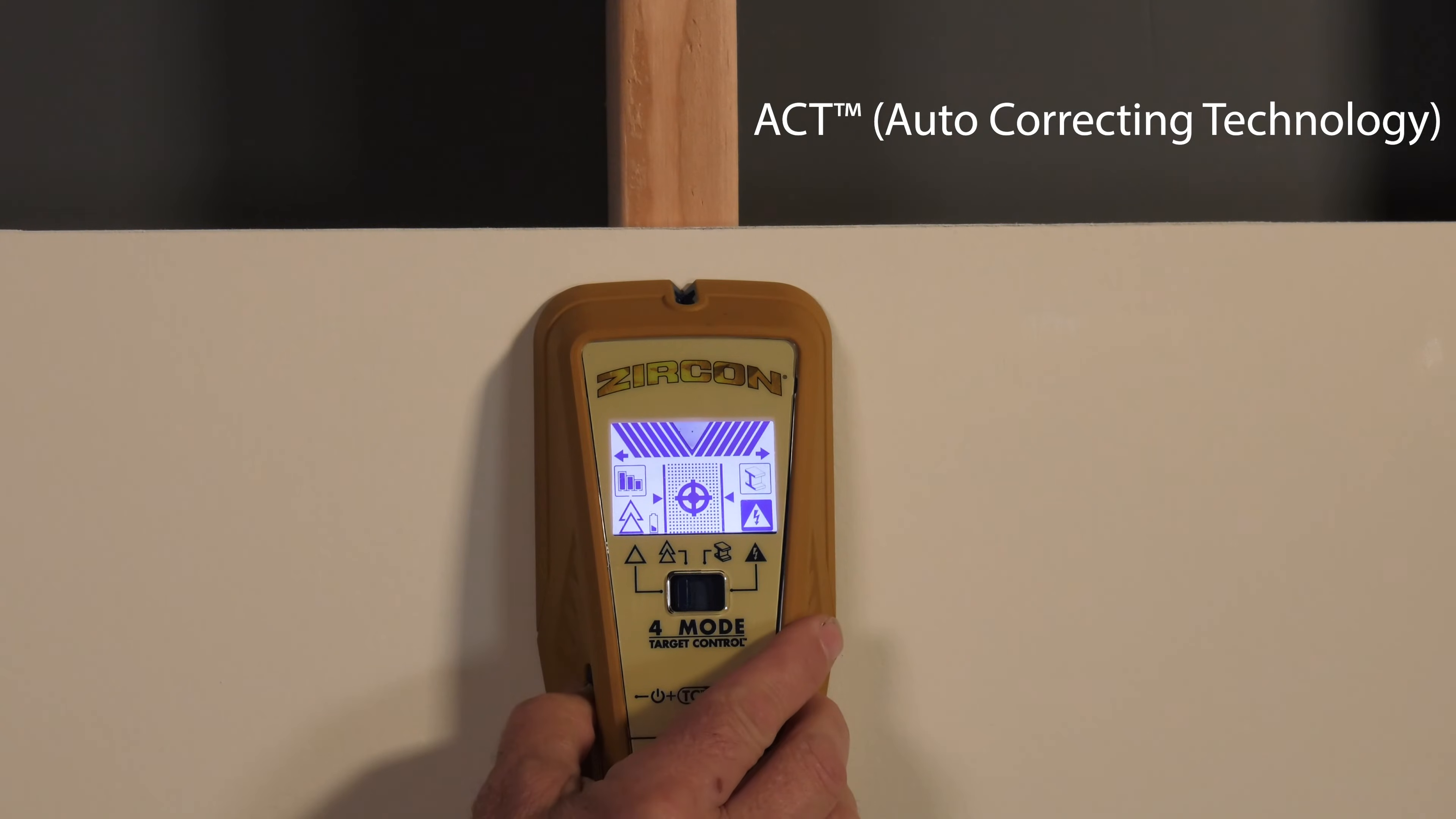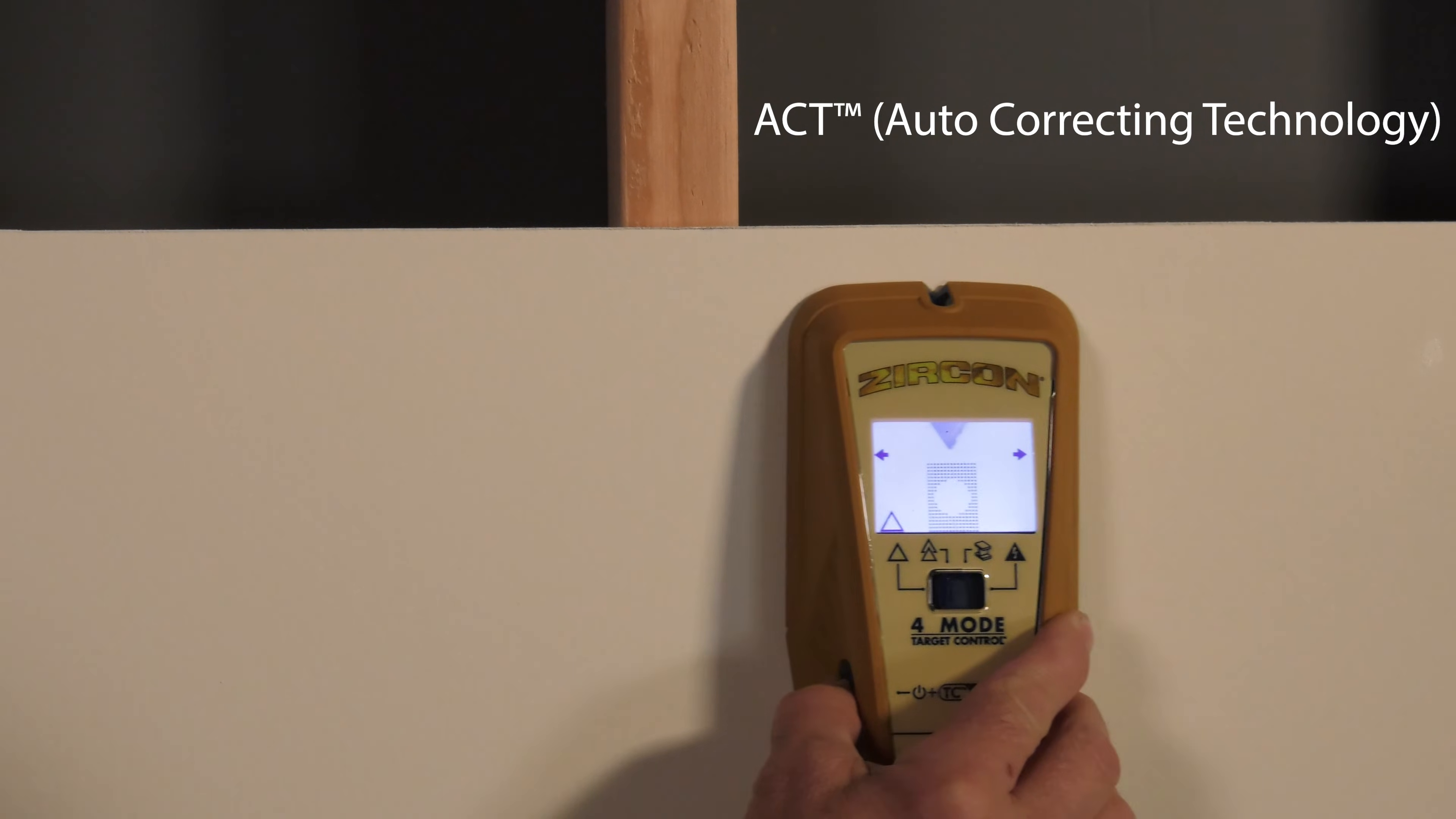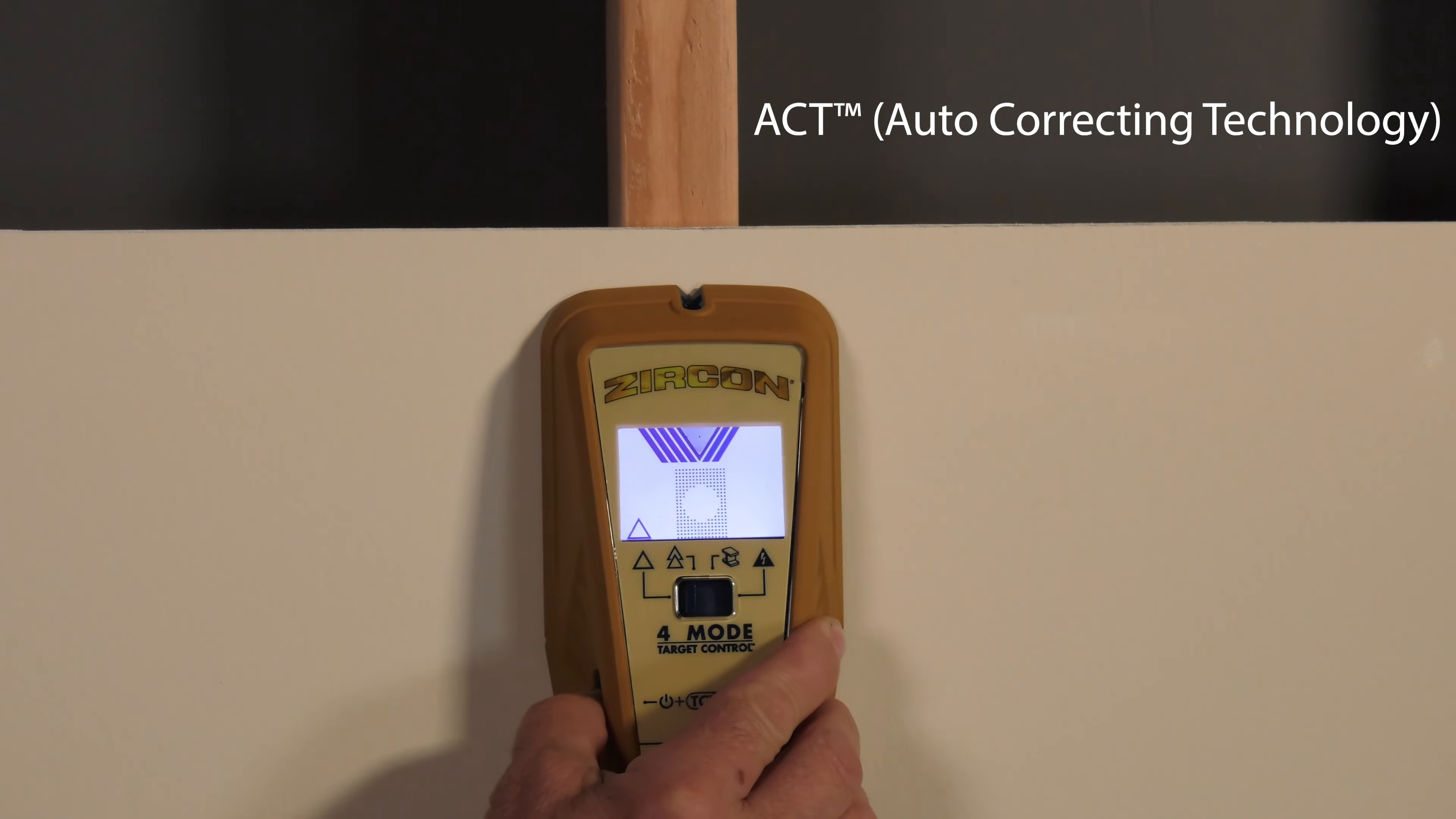If you happen to start over a stud and move away, two arrows will display on the screen. Move the tool horizontally back towards the direction of the missed stud.